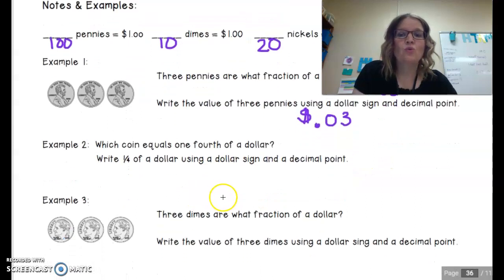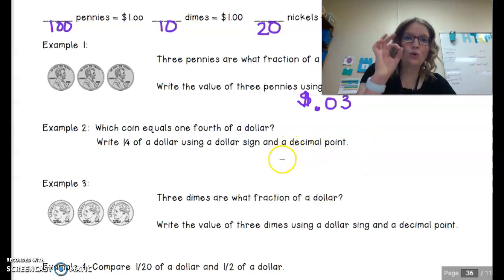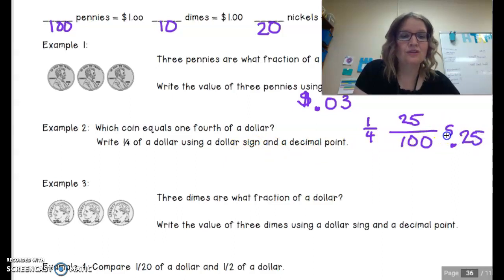The next question, what coin equals one fourth of a dollar? In this situation, we know that a quarter, there are four quarters to a dollar. And so when we have one quarter of a dollar, it would be one fourth, but we also know that a quarter is valued at 25 cents. So 25 cents out of a dollar is another way that we can write it. We can also write it as a decimal, which is $0.25.